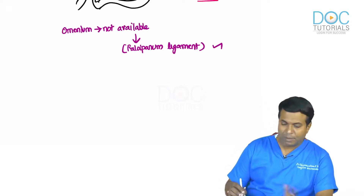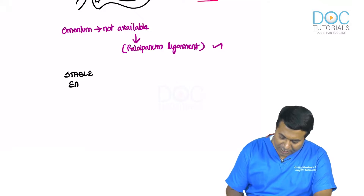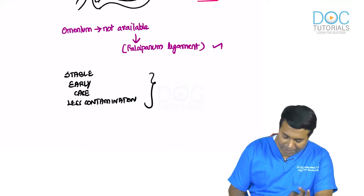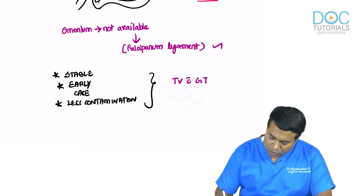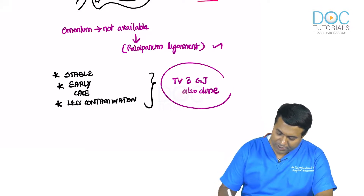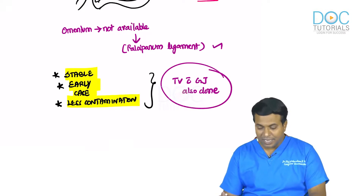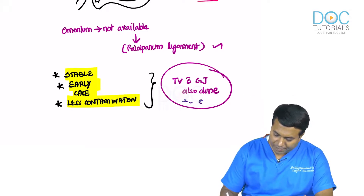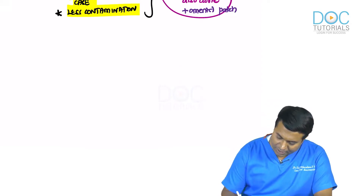If the patient is stable, it is an early case, and there is minimal contamination, truncal vagotomy with gastrojejunostomy can be added along with the omental patch closure. This is not done routinely — only in selected stable, early, low-contamination cases.